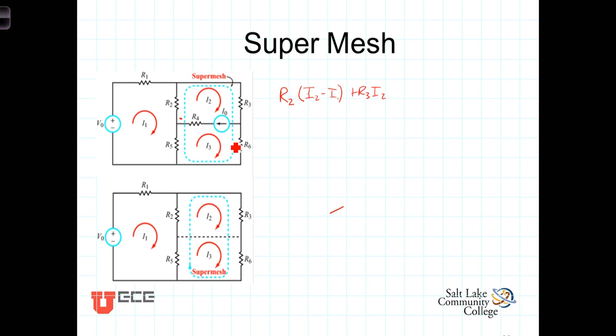How do we resolve this? Well, to resolve it, we take advantage of the fact that the sum of the voltage drops around any closed loop must equal zero. So instead of going around each of these meshes separately, we're going to make a trip around the outside of both of these loops combined.